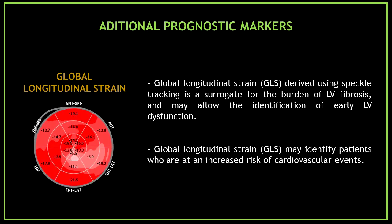The third additional prognostic marker is global longitudinal strain. Global longitudinal strain derived using speckle tracking is a surrogate for the burden of left ventricular fibrosis and may allow identification of early left ventricular dysfunction. Global longitudinal strain may also identify patients who are at increased risk of cardiovascular events.